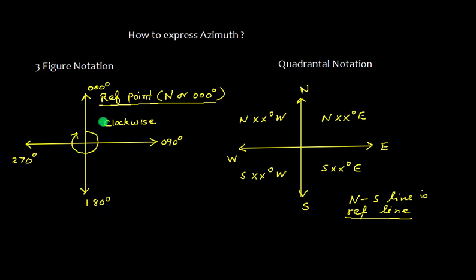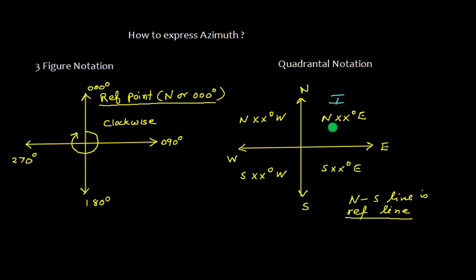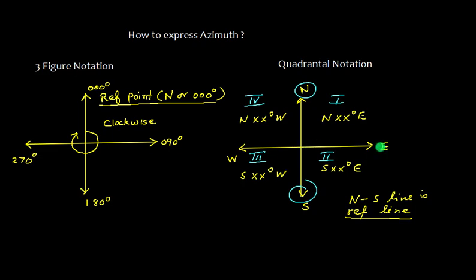We can express azimuth in three-figure notation where the reference point is north or 000. Similarly, we can express it in quadrantal notation where we take the reference from the north and south line. This quadrant will be north XX degrees east, this will be south XX degrees east, this side will be south XX degrees west, and this side will be north XX degrees west.